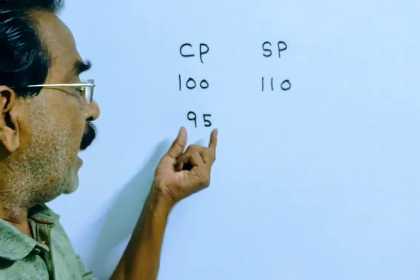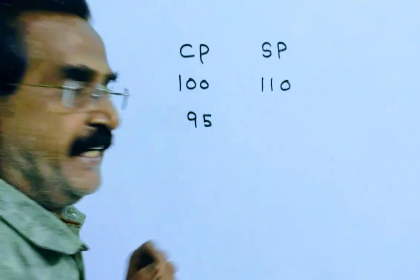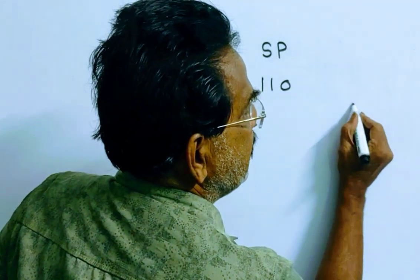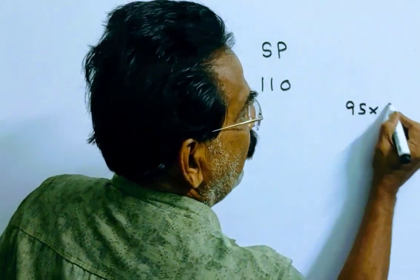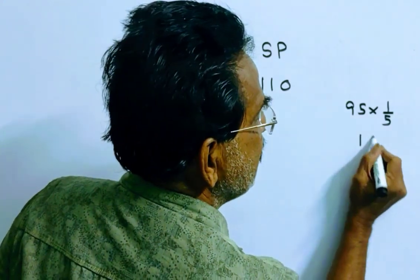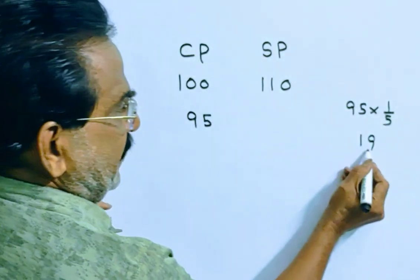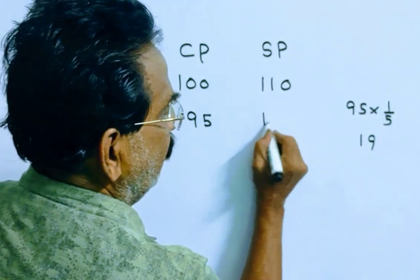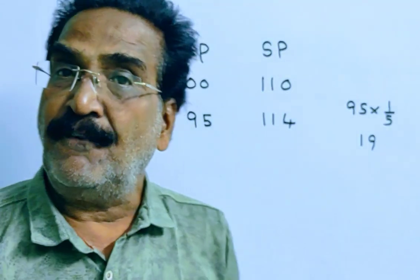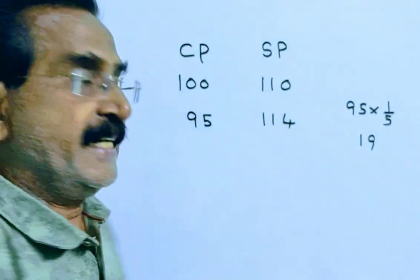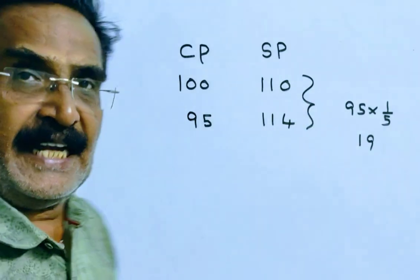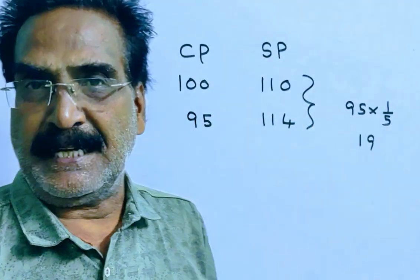Friends, to have 20% profit on 95: 20% means 1/5, so 1/5 of 95 is 19. So 95 plus 19 equals 114. The selling price must be 114, which is Rs. 4 more than the earlier selling price.